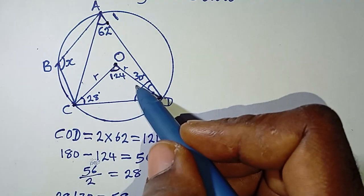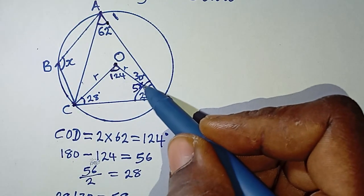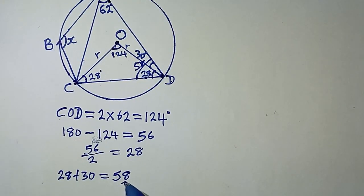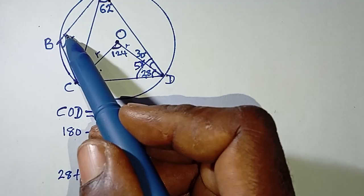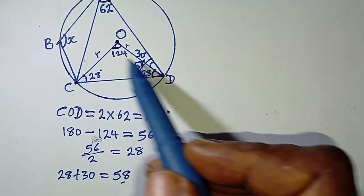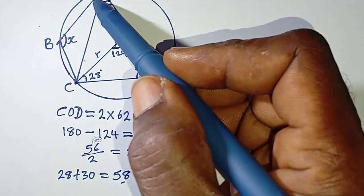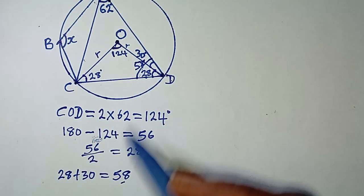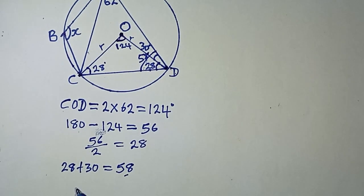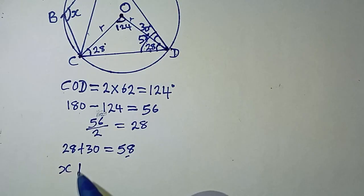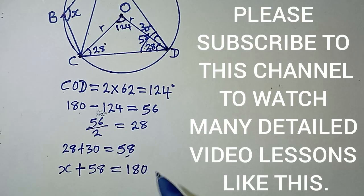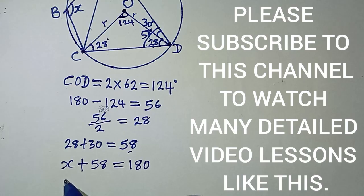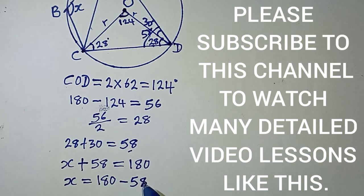The full angle is 58°. Since X and 58° are opposite angles of the cyclic quadrilateral, they are supplementary. So X plus 58 equals 180°. Therefore, X is equal to 180 minus 58.